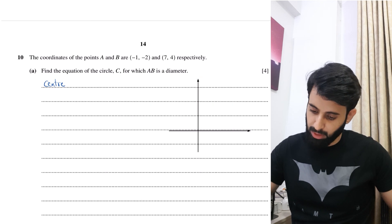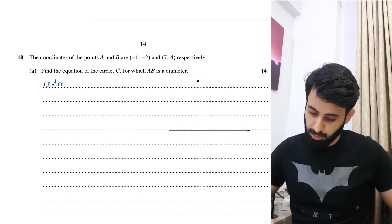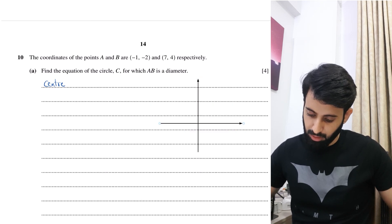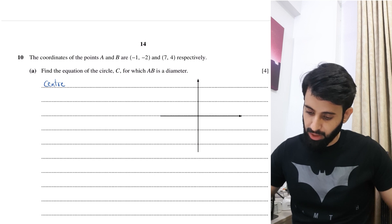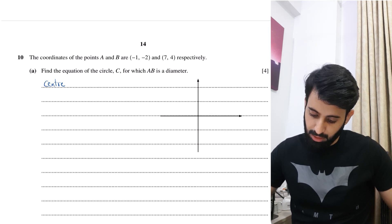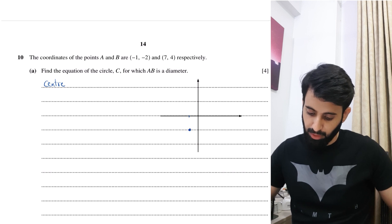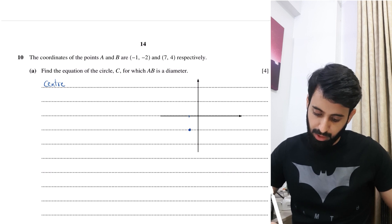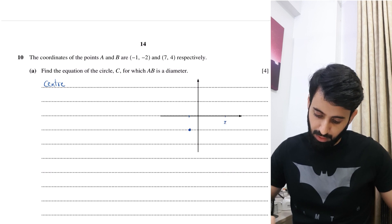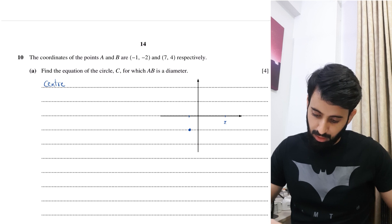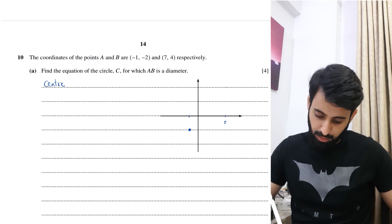Minus 1, minus 2 means x is negative and y is negative, so we're in the third quadrant — somewhere over here. 7, 4 means we're in the first quadrant, so let's say 7 and 4 are approximately here.